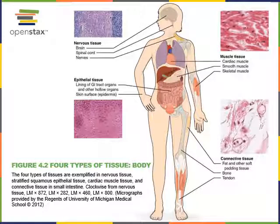Epithelial tissues are avascular with no blood vessels. Blood vessels run through the underlying connective tissue to provide nutrients and carry waste away from epithelial cells, but no blood vessels actually travel through the epithelium. Epithelial tissues also have a high capacity to regenerate, with stem cells found within the epithelium that can divide to replenish cells that are lost.